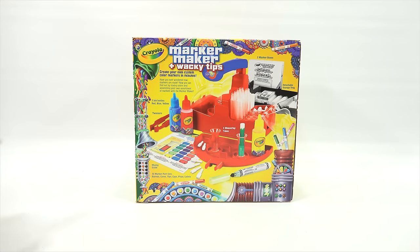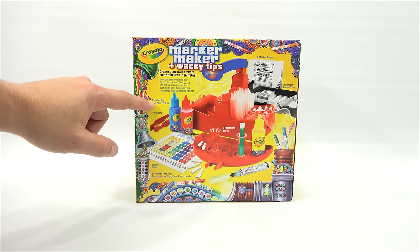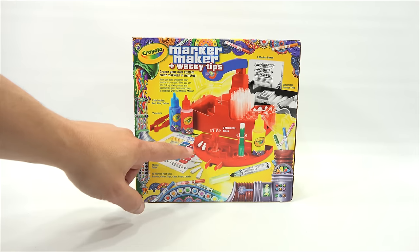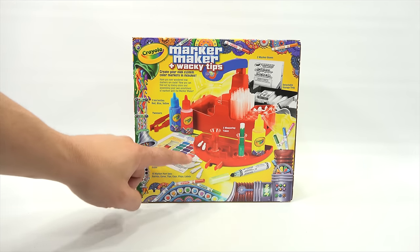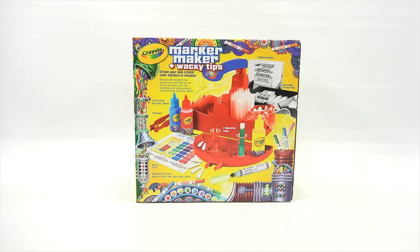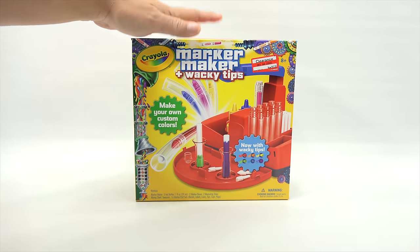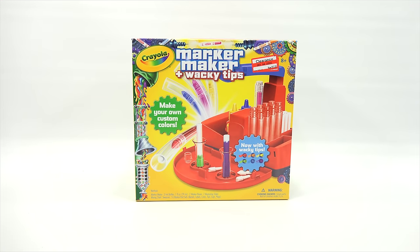Now the back. Create your own custom color markers in minutes. Have you ever wondered how markers are made? Now you can find out by mixing colors and assembling your own assortment of markers with the Marker Maker. You get three colors: blue, red, yellow. And those combinations can be mixed on this color chart. There's the six Wacky Tips. So when I come back, I will have this out of the box. We'll set it up, and we'll continue on showing you the Wacky Tips Marker Maker.